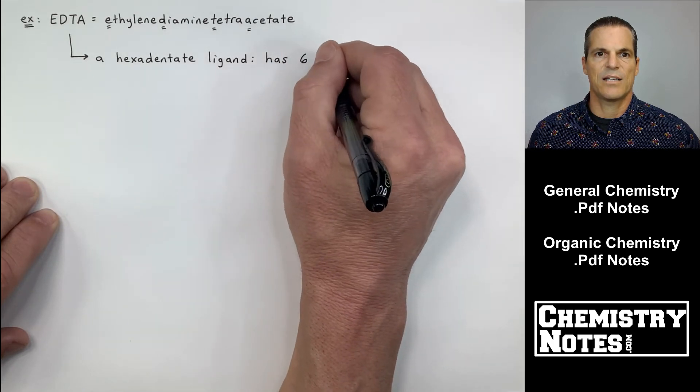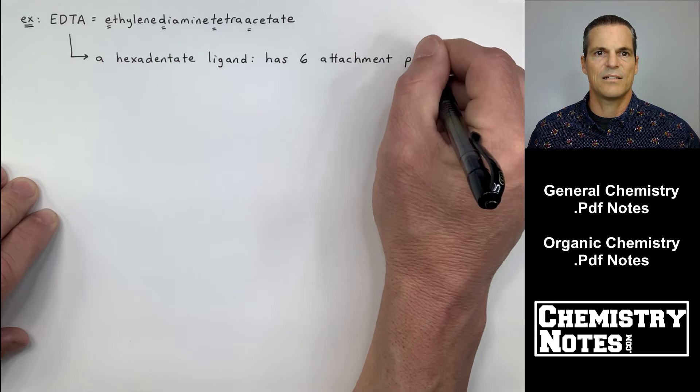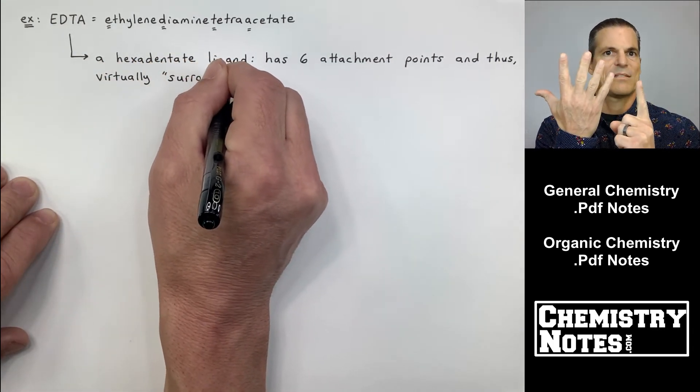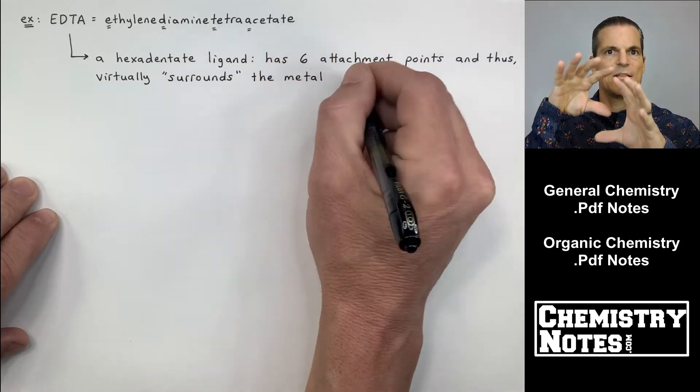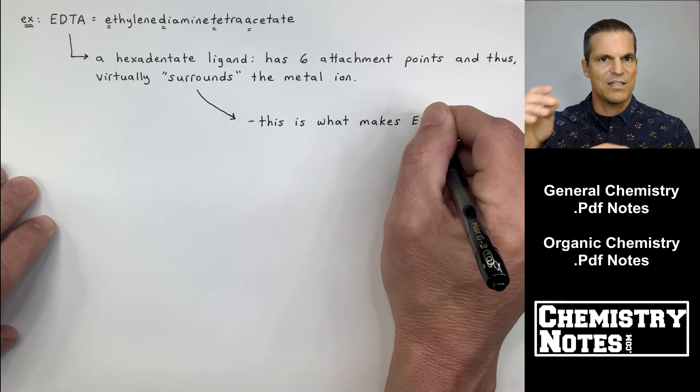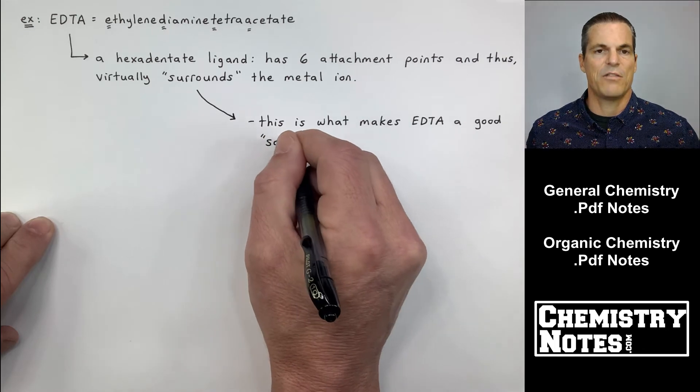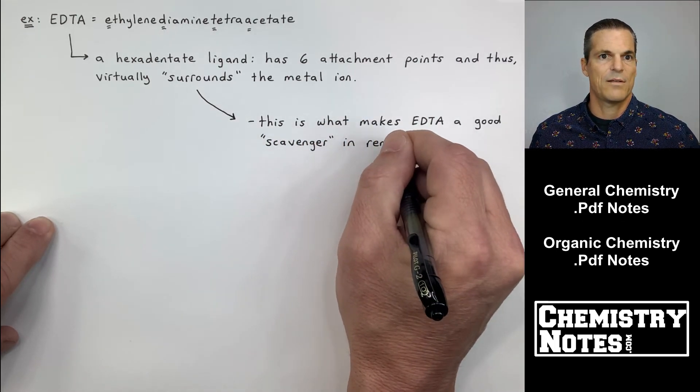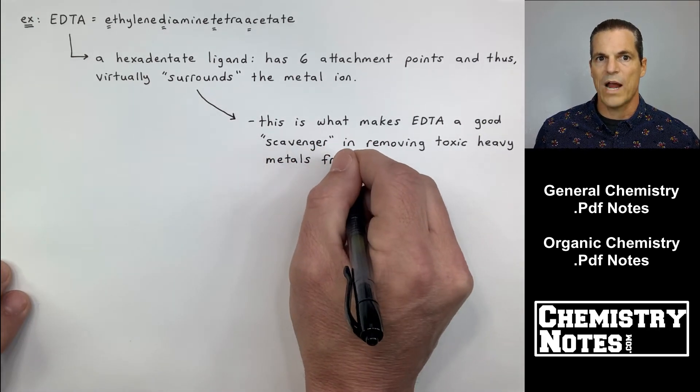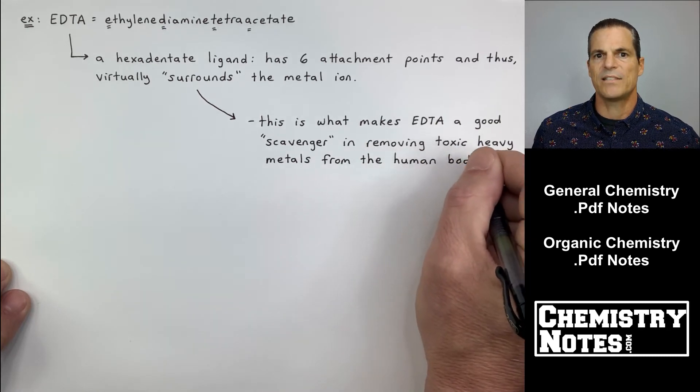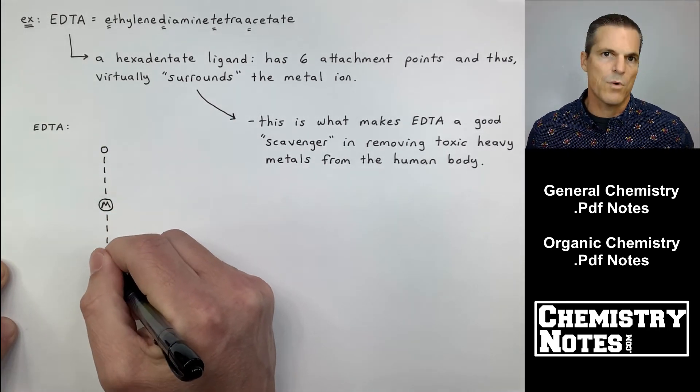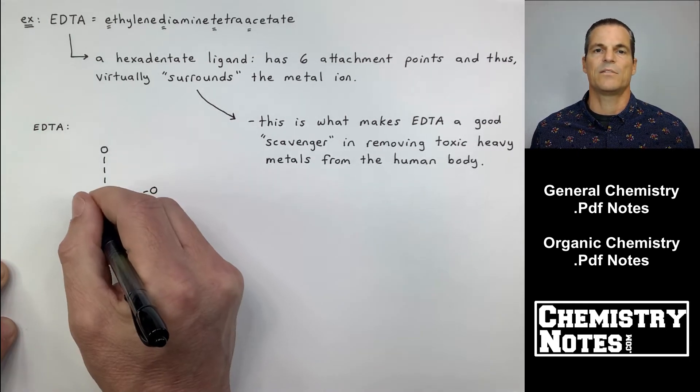EDTA. This is a hexadentate ligand. If it's hexadentate, that means it has six attachment points. EDTA is one molecule, but it will attach to a metal ion six different spots. So you can imagine this just enveloping or encasing the metal ion. Almost forming a cage around it. If you're going to have one molecule hitting all of those octahedral points, it better be looking like a big old claw around the metal ion. I'm going to try to draw that for you over here on the left of this page. But just to reread what our notes are saying, it's a hexadentate ligand, has six attachment points, and thus virtually surrounds the metal ion. This is what makes EDTA such a good scavenger, by the way. It can kind of envelop, or surround, or encompass, or encase these toxic heavy metals and help remove them from the human body.